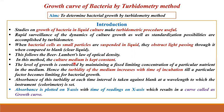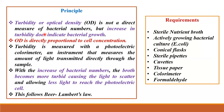In this method the culture medium is kept constant. The level of growth is controlled by maintaining a fixed limiting concentration of a particular nutrient in the medium. Hence the turbidity of the medium increases with the time of incubation till a particular factor becomes a limiting factor for bacterial growth. Absorbance of this turbidity at each time interval is taken against a blank at a wavelength to which the instrument — that is a colorimeter — is set. Absorbance is plotted on the y-axis with time of readings on the x-axis, which results in a curve called the growth curve.